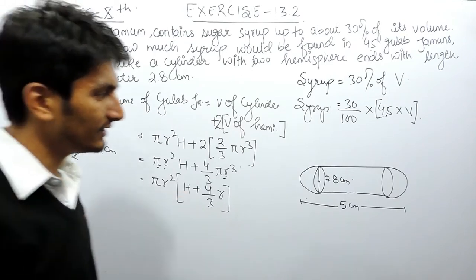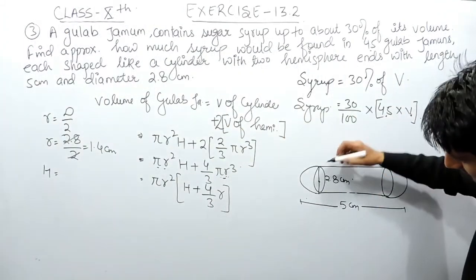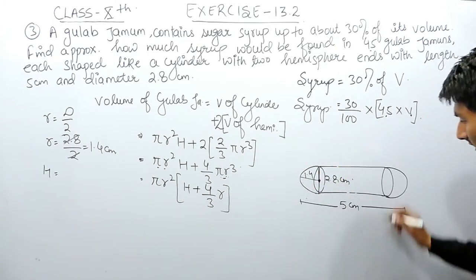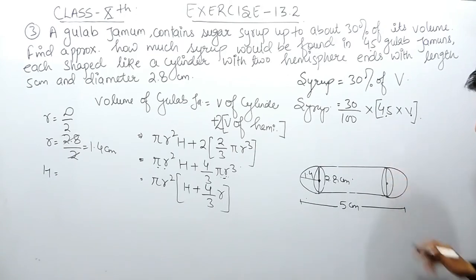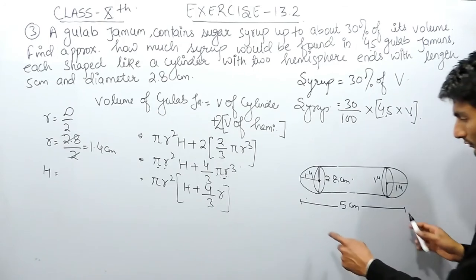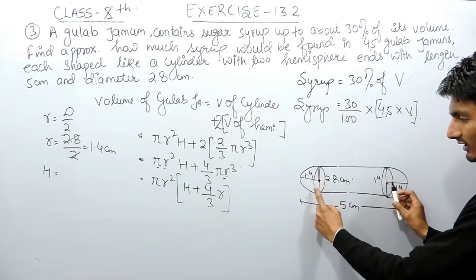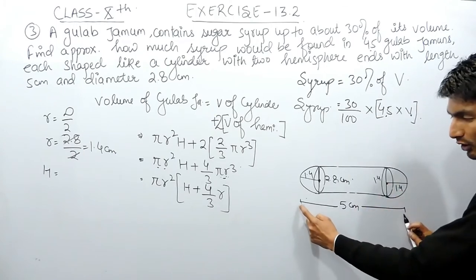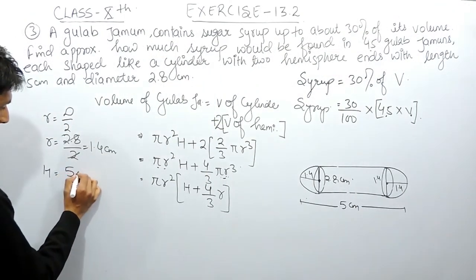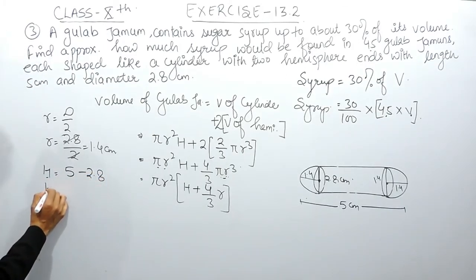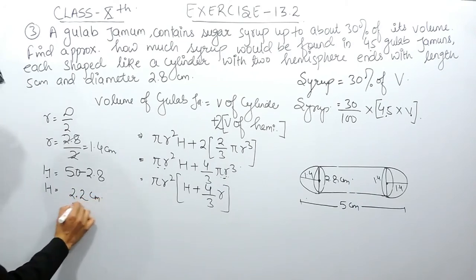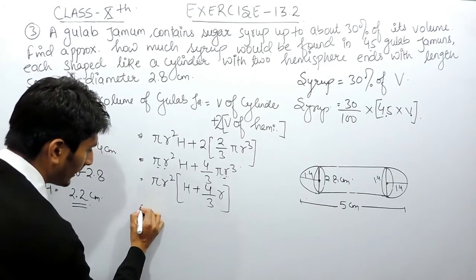The height h is the height of the cylinder. Each hemisphere has radius 1.4 centimeters on both sides. So to find the cylinder height, I subtract 1.4 plus 1.4 from 5 centimeters. That gives 5 minus 2.8, so the height h equals 2.2 centimeters.